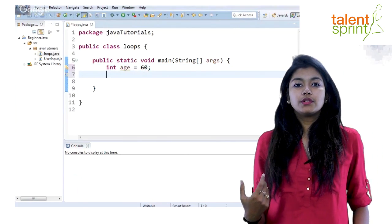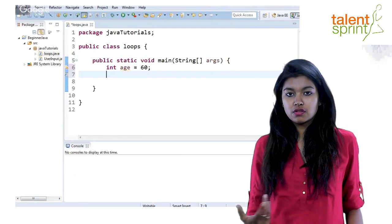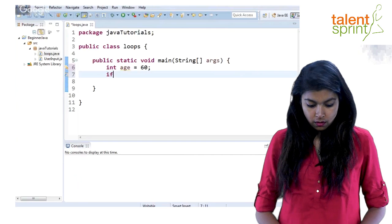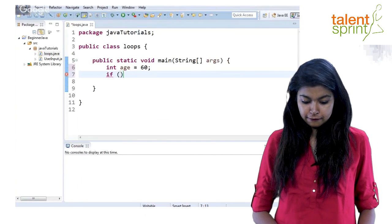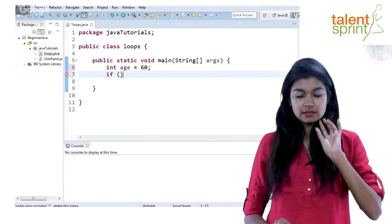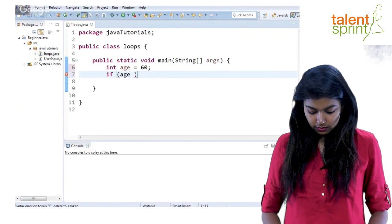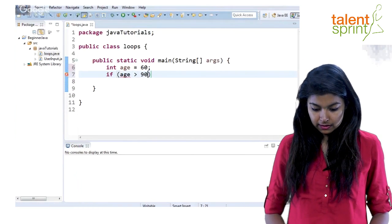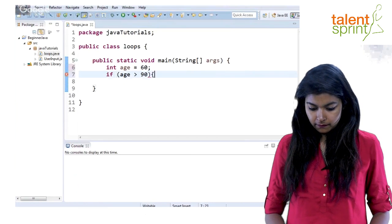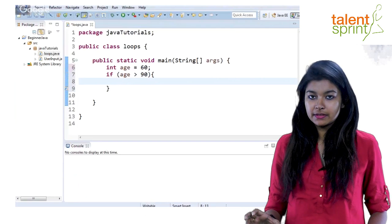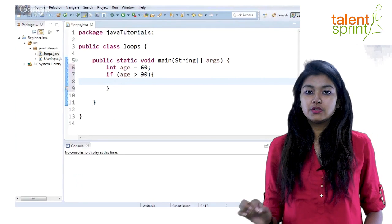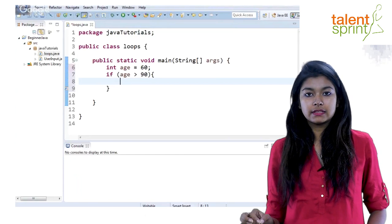Now if you want to print the age or do some conditional logic based on this age, all you have to do is if braces and then inside give your conditions like if age is greater than 90, and then again curly braces. Now inside these curly braces whatever comes will be executed if the age goes greater than 90.